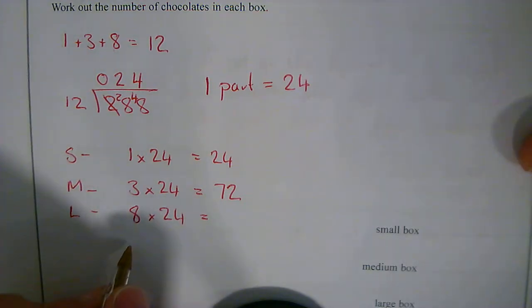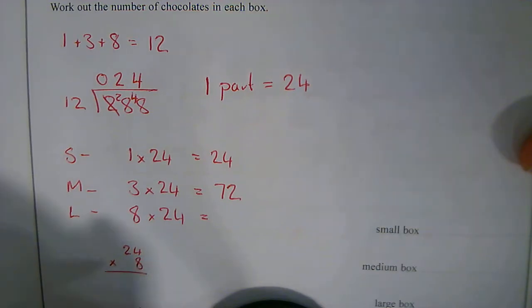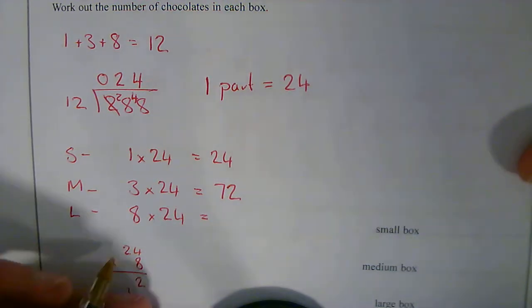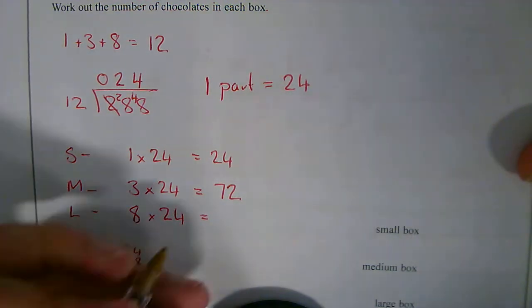And 8 times 24 is, well, let's use a calculator or, if you're feeling confident, you can use your written method. And then use your calculator to check it. So that's 32 carry into 3. That's going to go 16, add on the 3. 192.